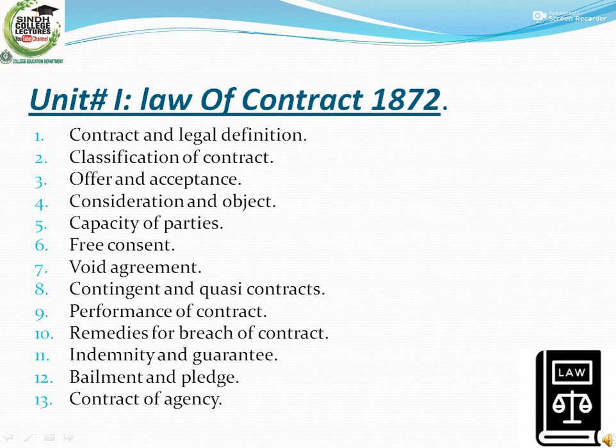Chapter 1 is about contract and legal definition. Number 2 is classification of contract. Number 3 is offer and acceptance. Number 4 is consideration and object. Number 5 is capacity of parties. Number 6 is about free consent. Number 7 is void agreement. Number 8 is contingent and costly contracts.